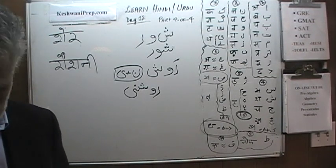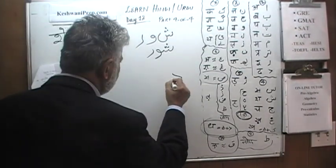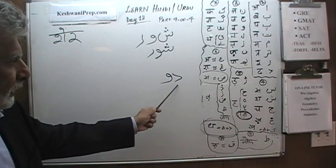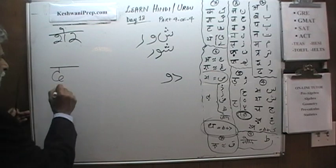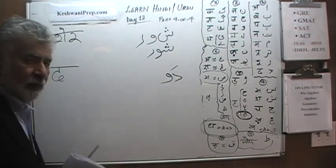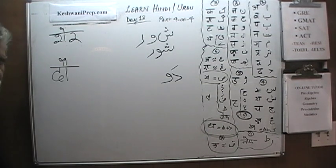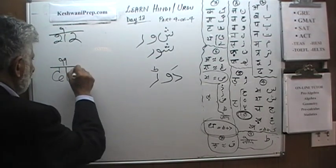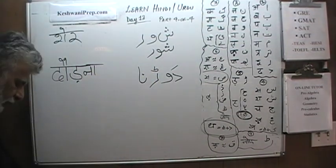Let's do one with Badi Oki Matra. This time we're going to use the Daal. Daal and a Vav — this letter is called Daal, it's a Da. But it has a Zabar on top because we're dealing with Badi Oki Matra. So this is Do — long O. Do, then Ra — Dorna. Dorna as in to run.